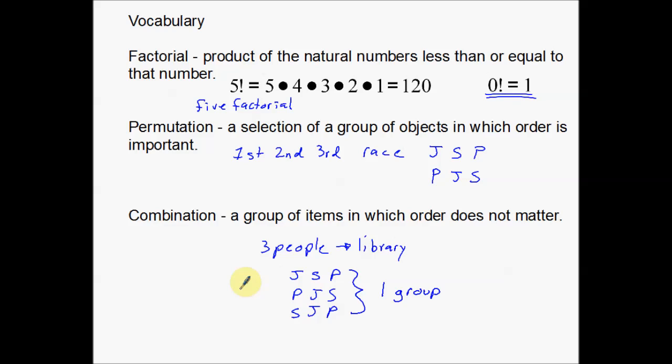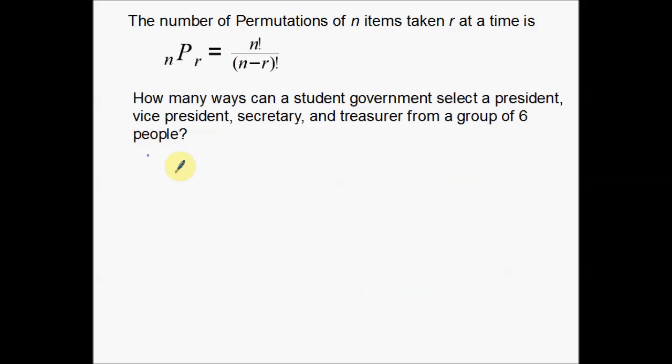So: permutations — order really does matter. Combinations — order does not matter. That's the big difference between both of them. Now on to a couple of examples.